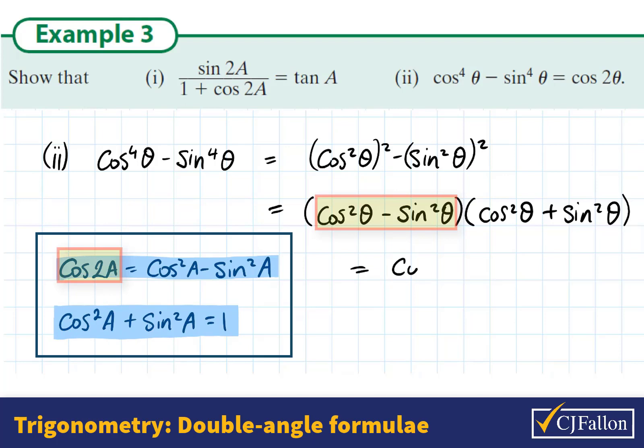Using these results we could rewrite what we have as cos 2 theta multiplied by 1 which is just cos 2 theta. So we've proven the identity.